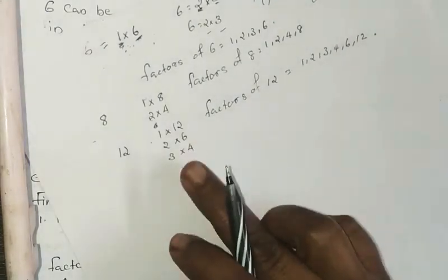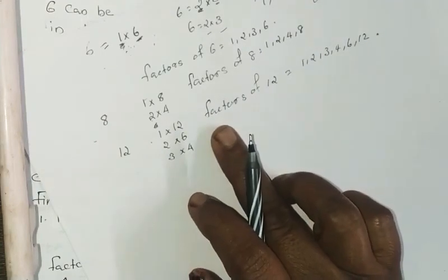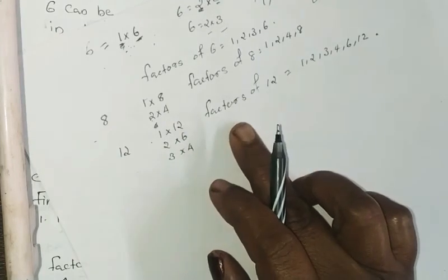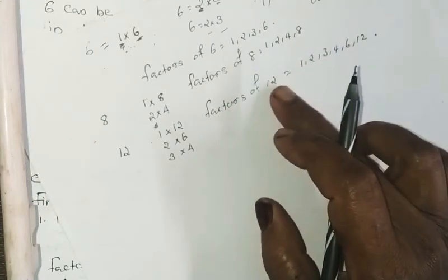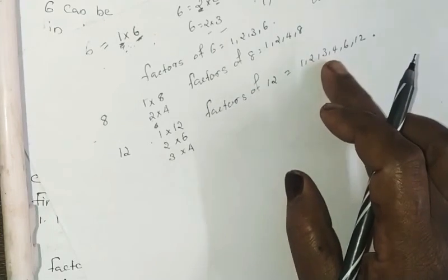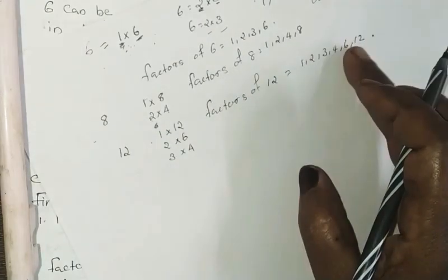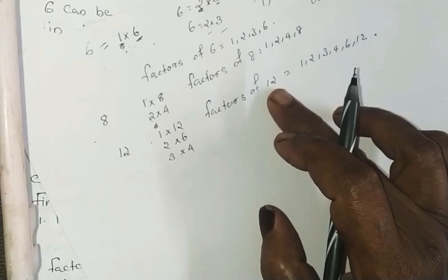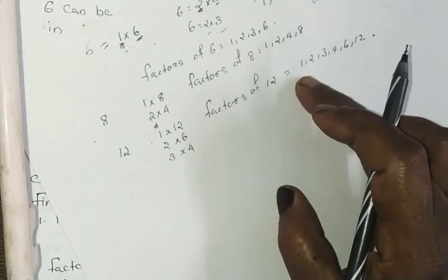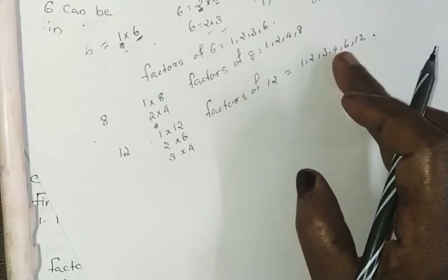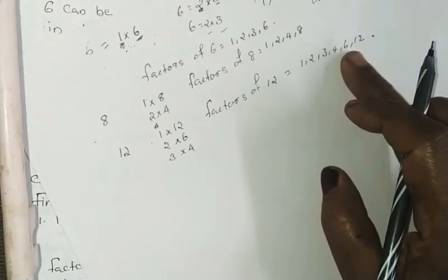The factor of a number is an exact divisor of that number. The factor of 12 is equal to 1 into 12. If this number is divided exactly by another number, then that number is a factor.